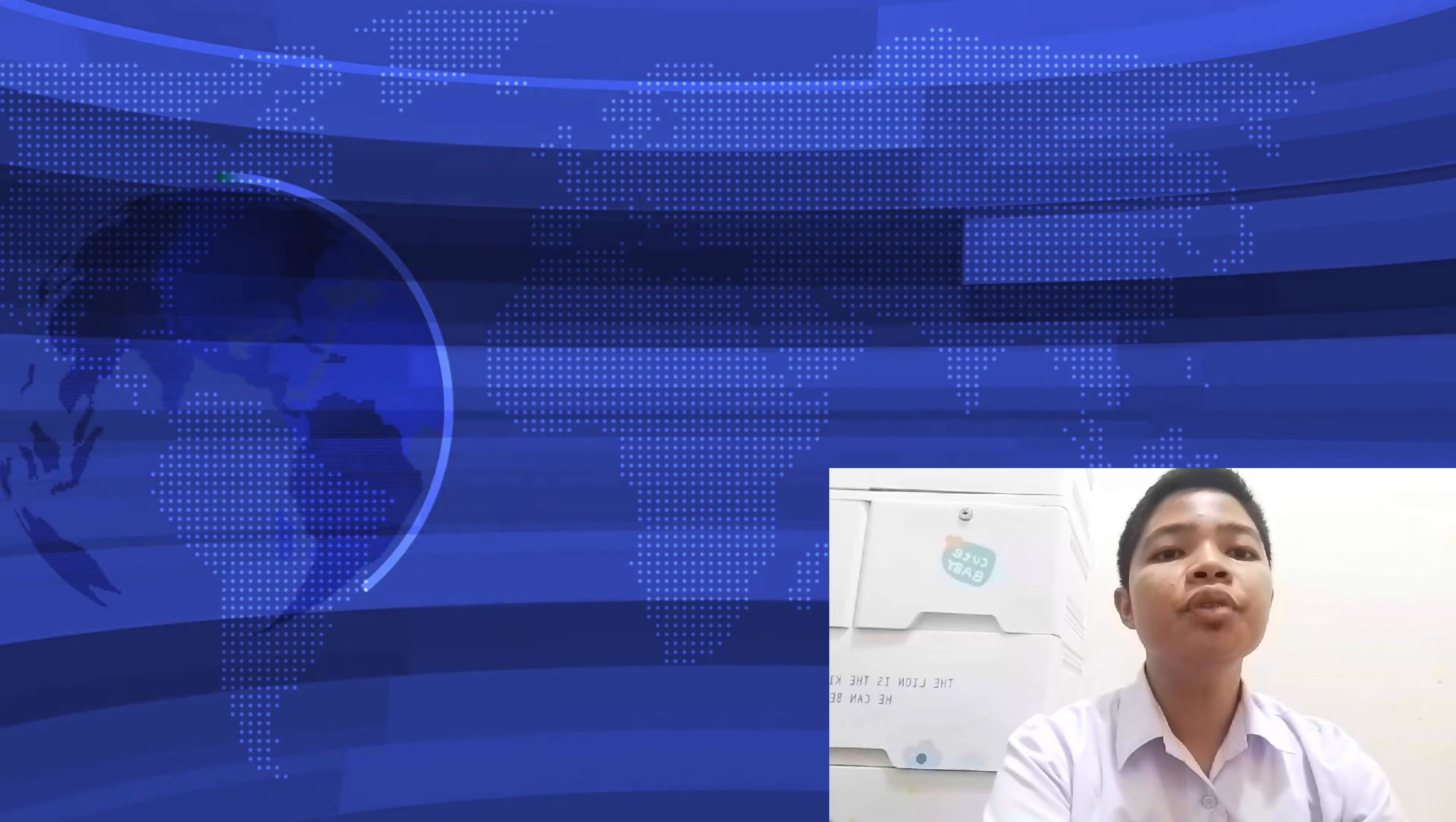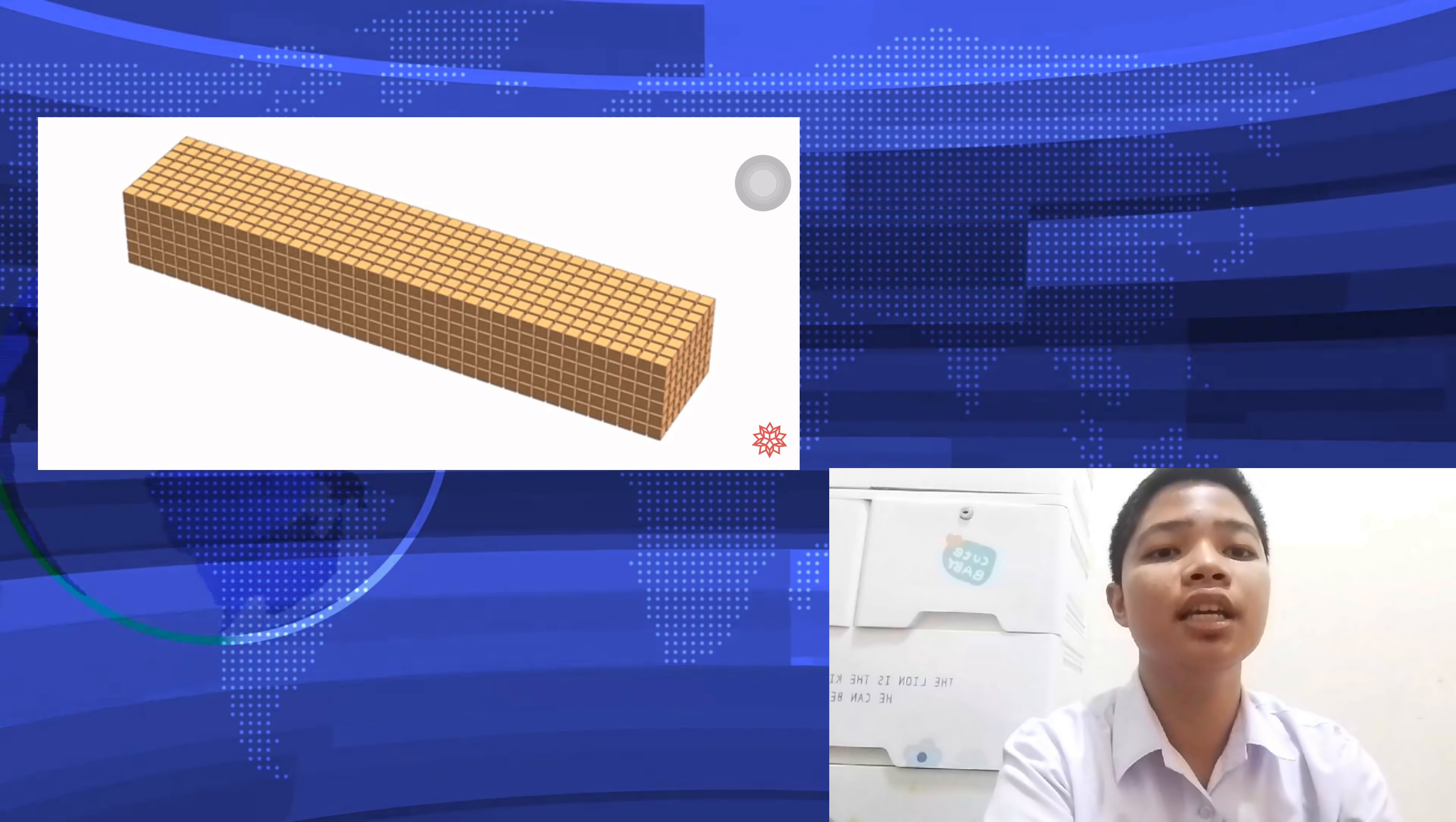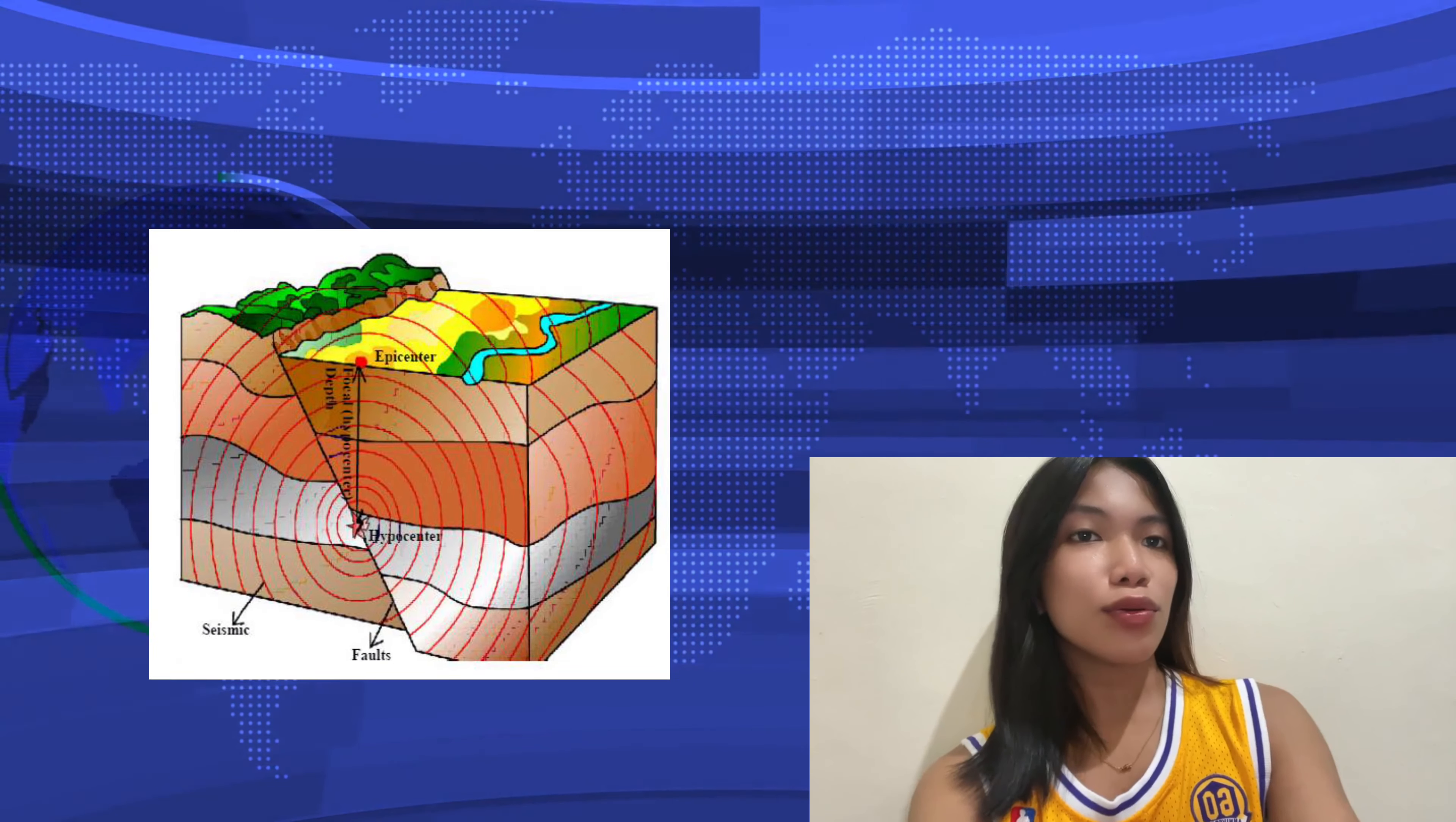To help visualize how seismic waves work, let's look at a sample demonstration. As you can see, P-waves move through the earth like compressions in a slinky, while S-waves cause a side-to-side shaking motion. Surface waves create rolling motion on the ground, which can be especially damaging. This demonstration helps us understand how these waves travel and interact with different materials.